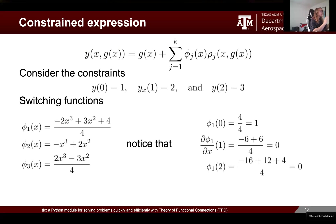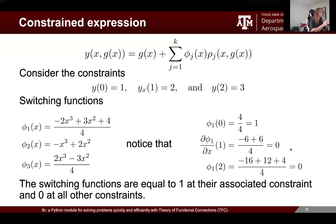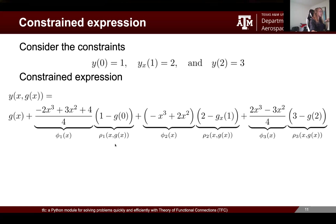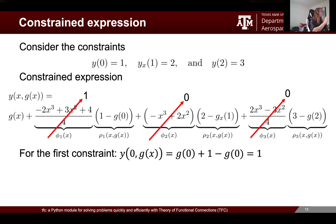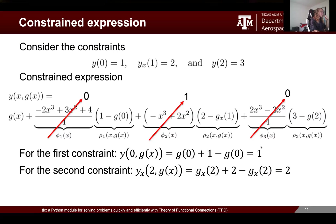Next are the switching functions. Here is a valid set of switching functions for these constraints. If we take the first switching function evaluated at the three different constraint points, it's equal to one at its associated constraint and zero at all the others. When we combine the switching functions and projection functionals into the full constraint expression and evaluate at the first constraint point x=0, the second and third switching functions go to zero, the first switching function goes to one, and we're left with G evaluated at the first constraint plus the first projection functional — yielding the constraint value of one. Regardless of how we choose G(x), so long as G(x) is defined at the constraints, the constraints are always satisfied.